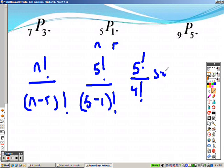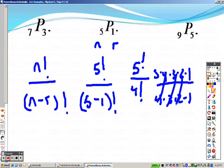So it's like saying 5 times 4 times 3 times 2 times 1 over 4 times 3 times 2 times 1. And these items cancel out, only leaving you with the 5. So really, this answer is just 5.